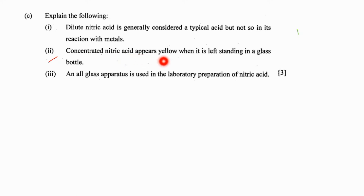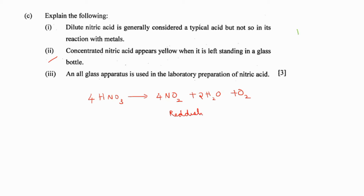Concentrated nitric acid appears yellow when left standing in a glass bottle. Nitric acid undergoes decomposition in the presence of light, producing nitrogen dioxide, water, and a little oxygen. Nitrogen dioxide is reddish-brown in color, and this gas dissolves in the same acid HNO3, causing the nitric acid to appear yellow. Write the balanced chemical equation along with this explanation for a better answer.